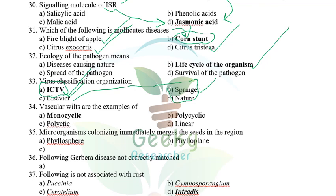Vascular wilts and root rots are examples of monocyclic diseases. Wheat stem rust is an example of a polycyclic disease. Vascular wilts come under monocyclic diseases. Microorganisms colonizing immediately near seeds in the rhizosphere region — I don't fully remember this question; options included phylosphere, phylloplane and others. Please let me know if you know the answer.